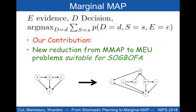Our second contribution is for marginal map. Marginal map is a hard inference problem where we seek the best setting for decision variables D that explain evidence E. As shown in the equation, this is a maximization for D over summation or expectation for S.